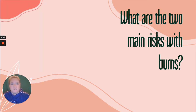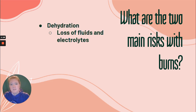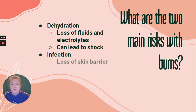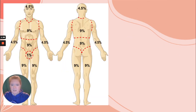What are the two main risks with burns? Dehydration, because there's loss of fluid and electrolytes — your skin provides a waterproof barrier, and when you lose that barrier you increase your risk of dehydration, which can lead to shock. The second main risk is infection. You lose the skin barrier, and there is more of a chance that something that could cause infection can get inside your body.